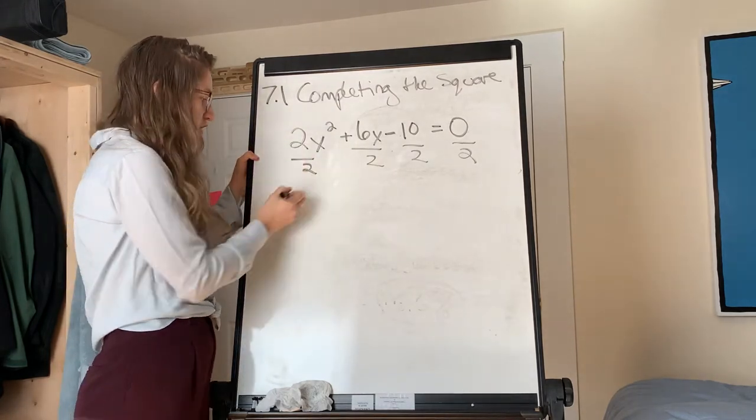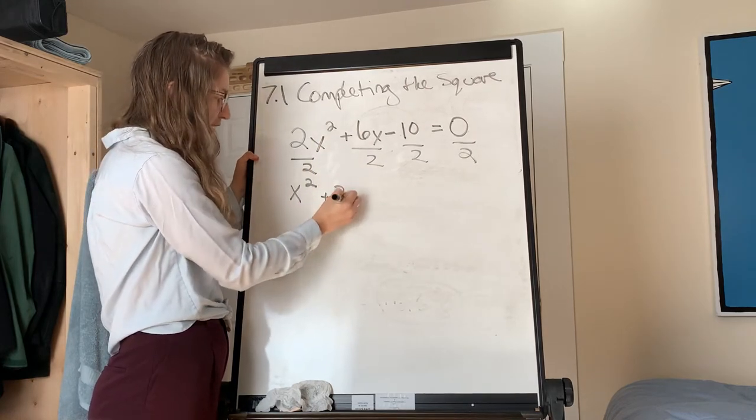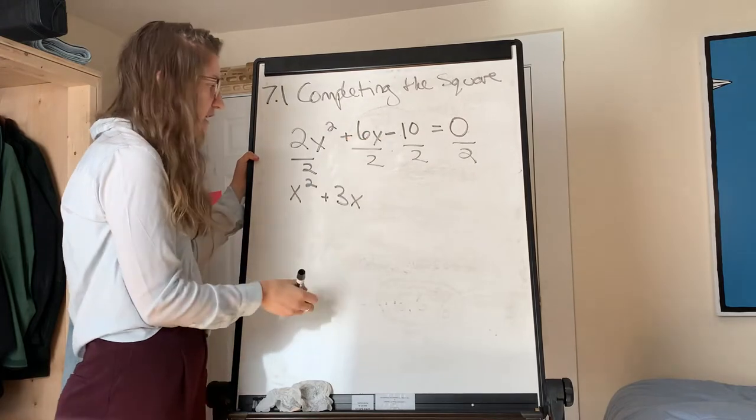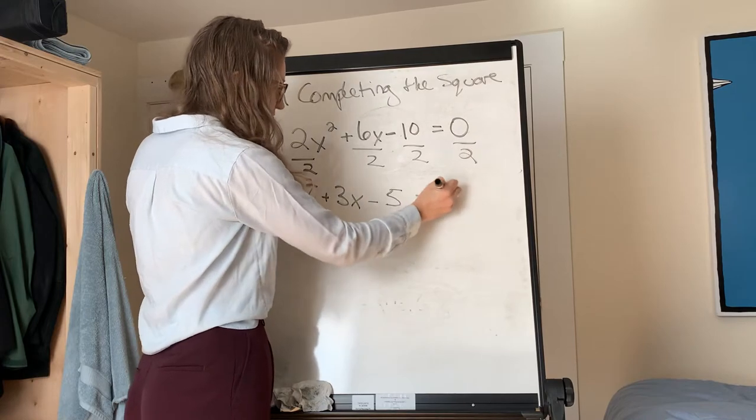So 2x squared divided by 2 is just x squared. 6x divided by 2 is a positive 3x. And negative 10 divided by 2 is negative 5. And then 0 divided by 2 is still 0.